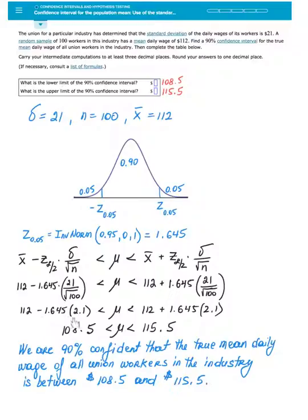Once we simplify all of these computations, we will end up with the following interval: the true mean is somewhere between $108.5 and $115.5. Therefore, we are 90% confident that the true mean daily wage of all union workers in this particular industry is between $108.5 and $115.5.